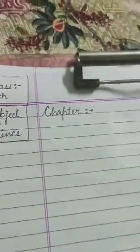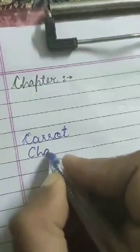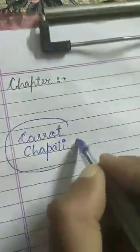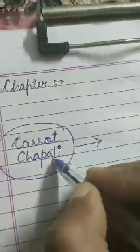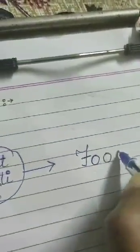But first of all, I want to know something. What have you eaten today? I hope you will eat healthy. So let me give an example. I have taken today carrot, I have taken today chapati. Now you all know that carrot, chapati, let it be rice or anything — these are the sort of food.